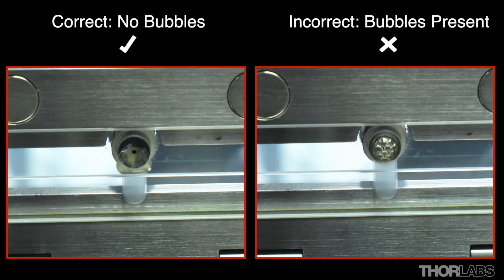Whichever method is used, it is important that care is taken to avoid bubbles in the UV acrylate material as it is injected into the mold.